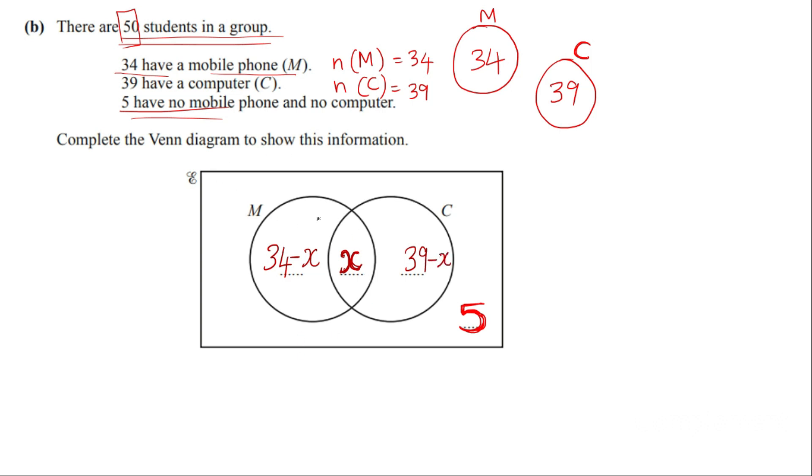Now we have to find the value of x. Now the data given is 50 students. That means every numbers inside or every data inside the Venn diagram should add up to 50. So you have 34 minus x plus x plus 39 minus x plus 5. So I have just taken all the four data from here. And you equate it to 50 because the sum should be the total number of students which is 50.